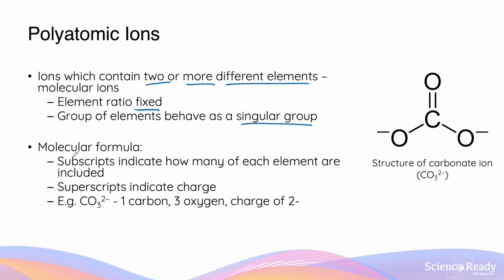Polyatomic ions always have a unique molecular formula. For example, carbonate ion is a commonly known polyatomic ion with the formula CO3 2-, consisting of one carbon atom, three oxygen atoms, and an overall charge of 2-. In the molecular formula, subscripts always indicate the number of atoms belonging to each element — the subscript 3 indicates three oxygen atoms — and superscripts always indicate the charge. The 2- in the top right corner is the overall charge of the carbonate ion.